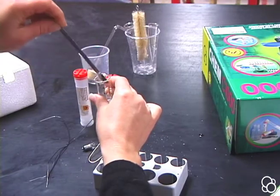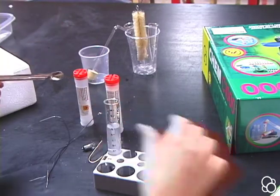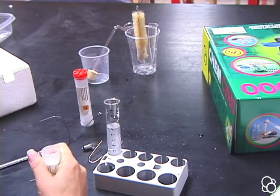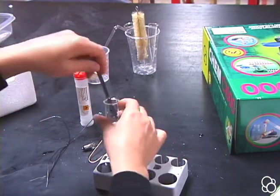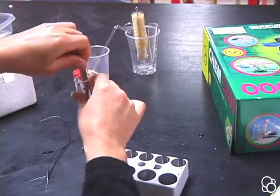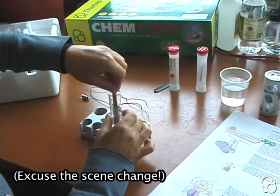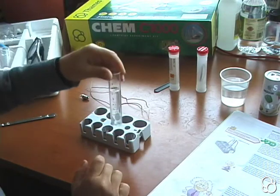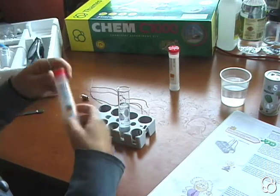Then we're going to add one spoonful of sodium hydrogen sulfate and mix it up. You can tell your audience that it's just water because it looks like water. So take a magnesium strip out of here.